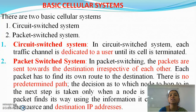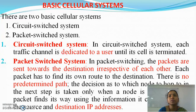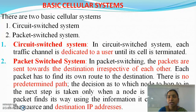There are two basic cellular systems: circuit switched systems and packet switched systems. In a circuit switched system, each traffic channel is dedicated to a user whether the user is actively using it or not. If the channel is not in use, it is wasted until the call is terminated.